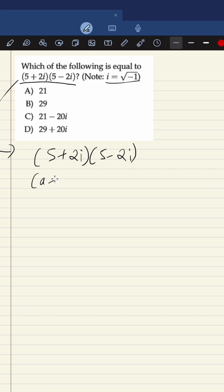The formula is (a + b)(a - b) = a² - b². We can apply this formula in this case. So a squared will be 5 squared minus b squared will be (2i) squared.